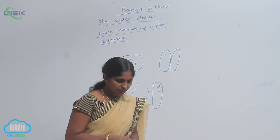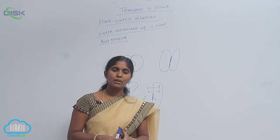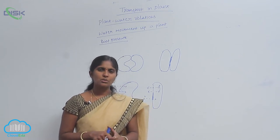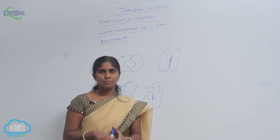The internal factors include number of stomata, distribution of stomata, opening and closing of stomata, and shoot root ratio. These all affect the transpiration.